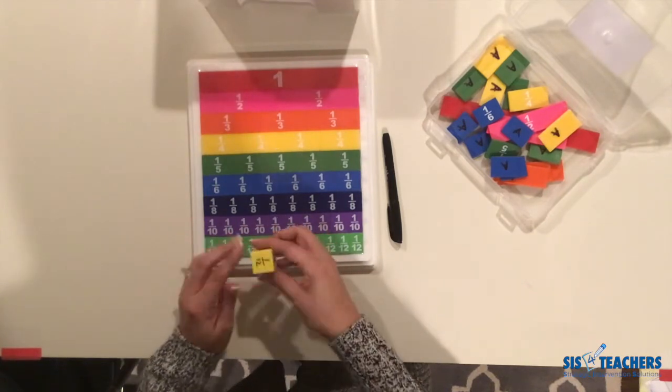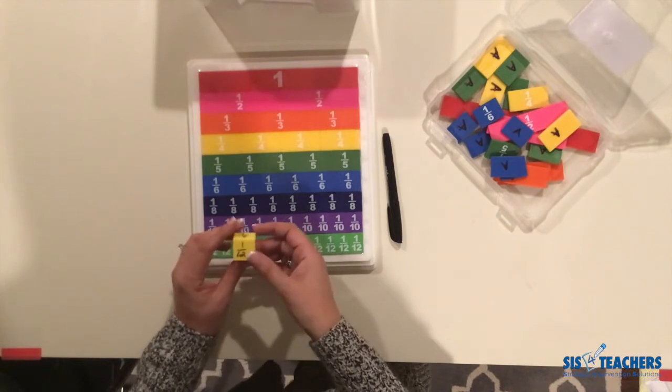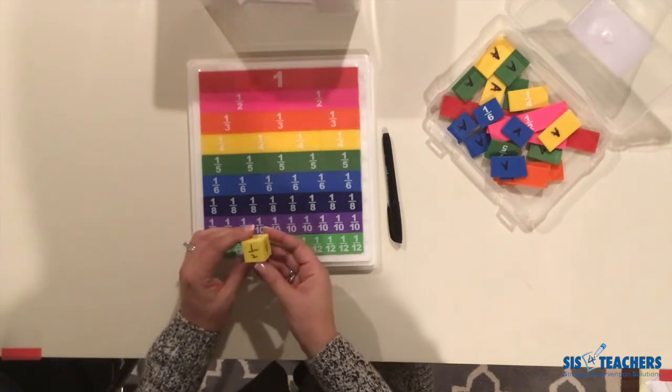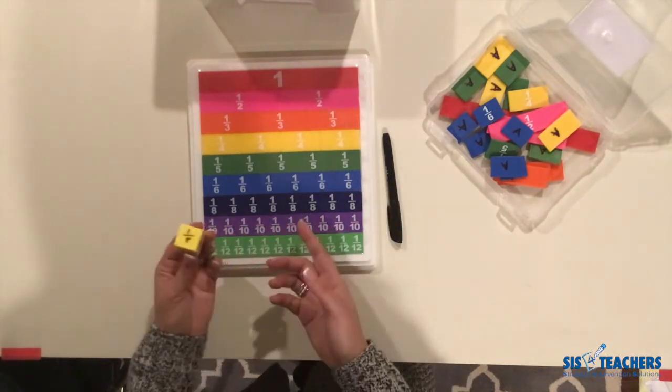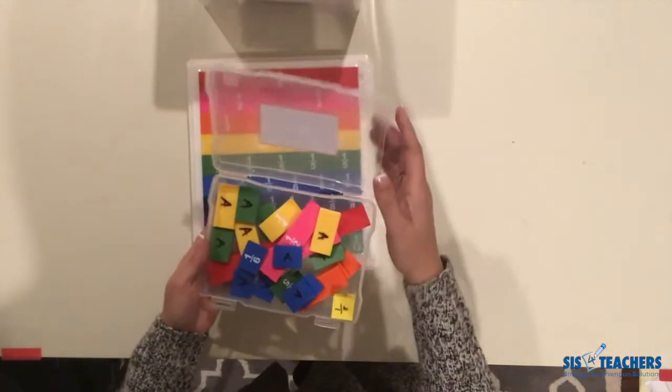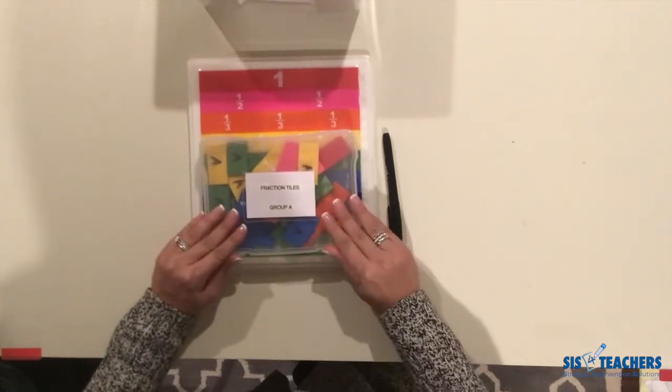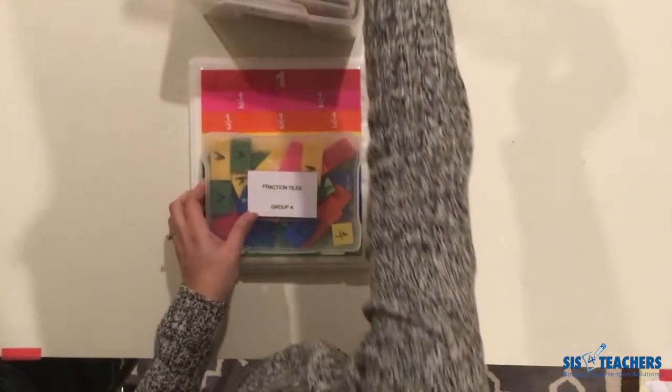And so these are just cubes that we use. I have labeled these for a game that we have for free on our website called Uncover and Cover that you can download. But it's a great game. You put your own dice in here. And the nice part is once you're set putting all of your decimal tiles in, it just easily closes with the dice and then goes inside the container.